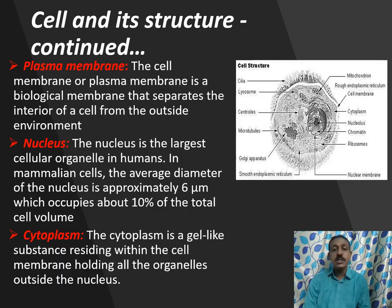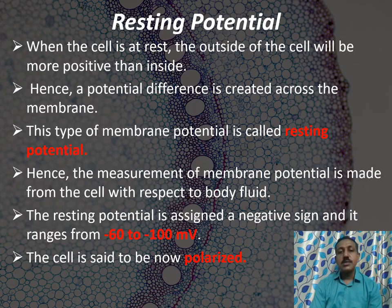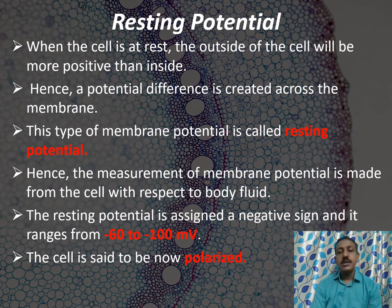Now we shall see about the resting potential. When the cell is at rest, the outside of the cell membrane will be more positive than the inside; hence a potential difference is created across the cell membrane, and this type of potential is called resting potential. This resting potential is measured across the membrane from the cell with respect to the body fluid. The resting potential is assigned a negative value and it ranges from -60 to -100 millivolts. At this stage, the cell is said to be in polarized form.